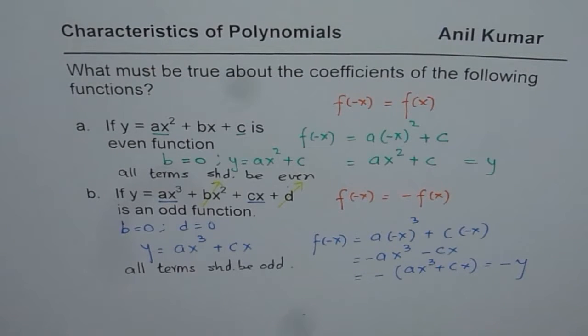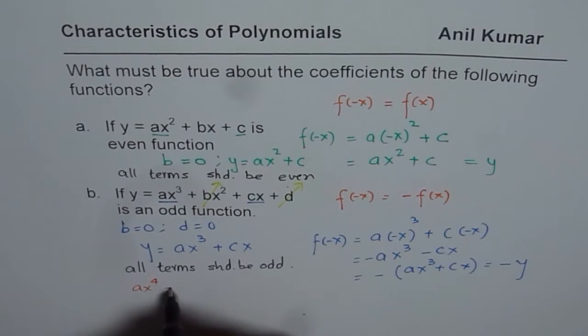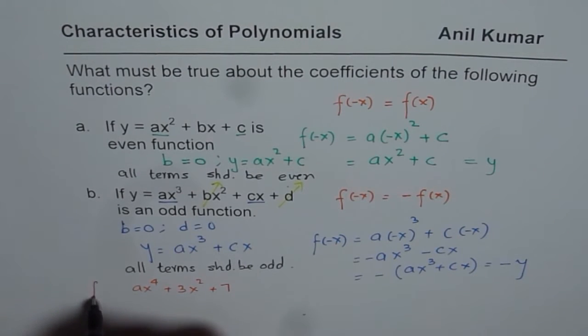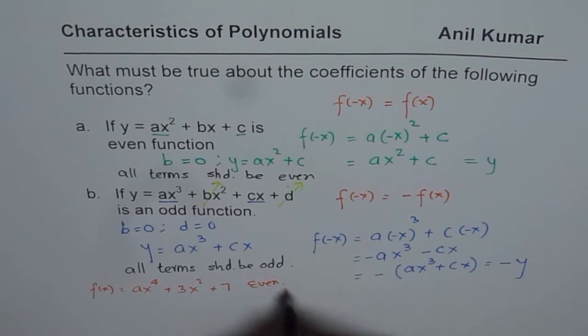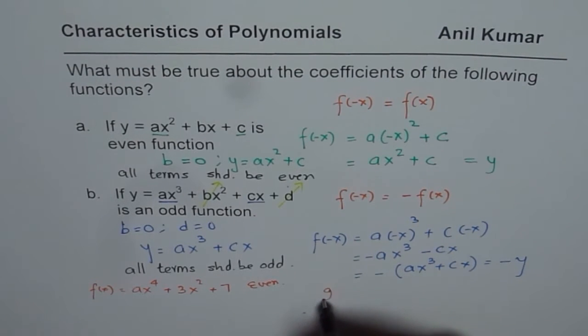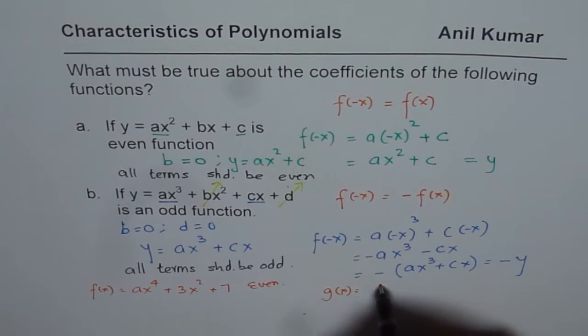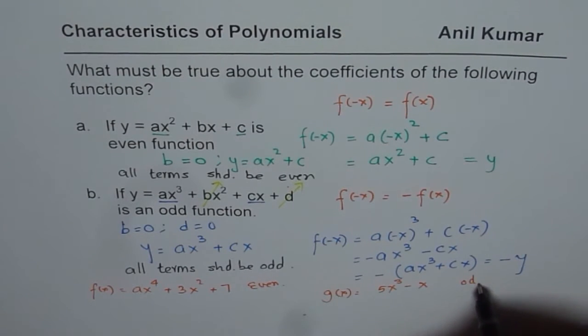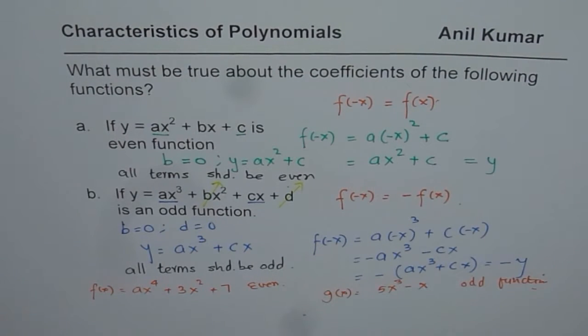For example, if you write any function which has even terms, for example, ax⁴ + 3x² + 7, this will be an even function. So this function has all even terms. On the other hand, if you write a function g of x equals, let's say, 5x³ - x, now these are odd terms, so this function is going to be an odd function. So you can always test with these properties whether they really are even functions or odd functions or not.